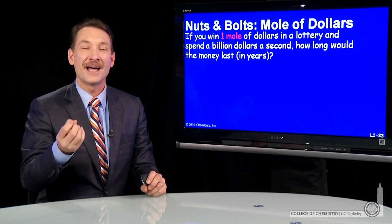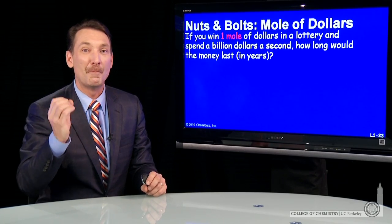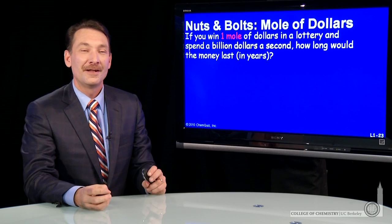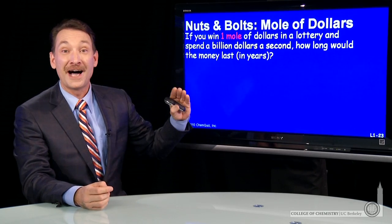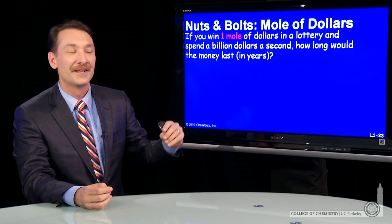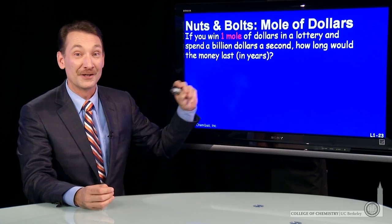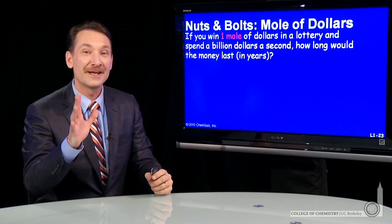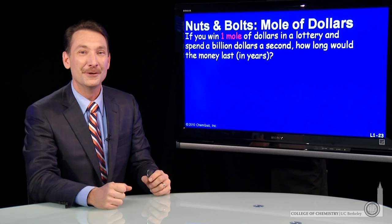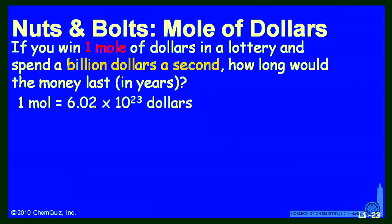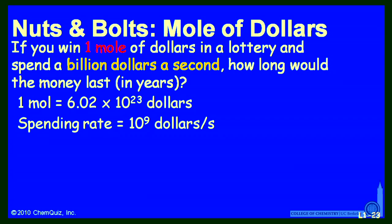Let's use conversion factors to estimate just how big a mole is. Say you won a mole of dollars in a lottery, and you could spend at $1 billion per second — an incredible spending rate. How long in years would it take you to spend your mole of dollars? Well, we have a mole of dollars: 6.02 times 10 to the 23rd dollars. Our spending rate is 10 to the 9th, that's $1 billion per second.